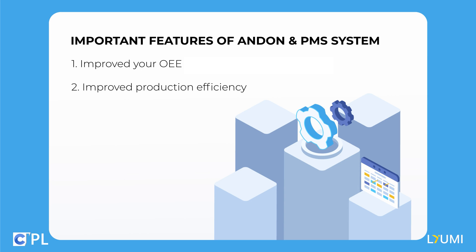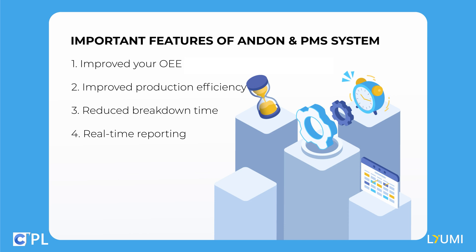Improved production efficiency: identifying and addressing issues helps adjust production to improve efficiency, reducing delays and missed deadlines. Reduced breakdown time: identifying and resolving issues quickly reduces the amount of time that equipment or machines are down. Real-time reporting: workers can report issues in real-time, allowing for quick identification and resolution of problems. Better data analysis: the Undawn system provides data that can be used to identify patterns and trends in production, helping to identify areas that need improvement and prevent major issues.